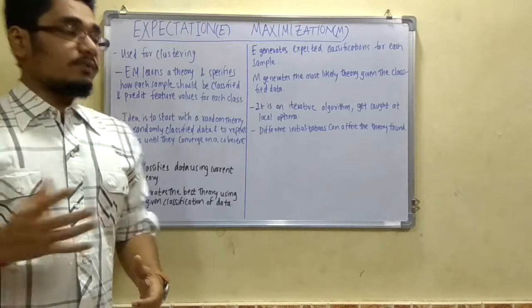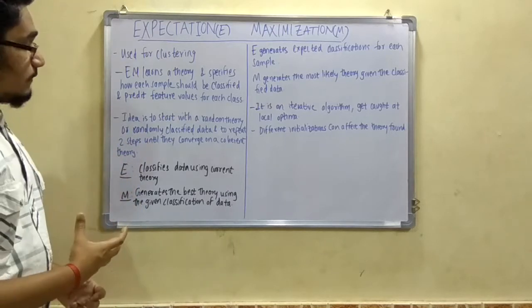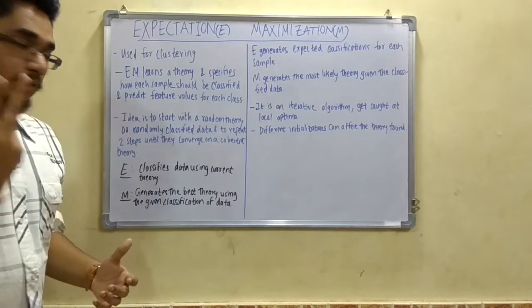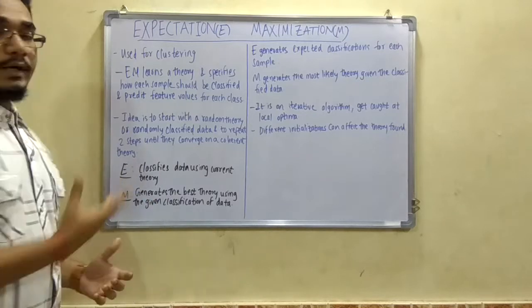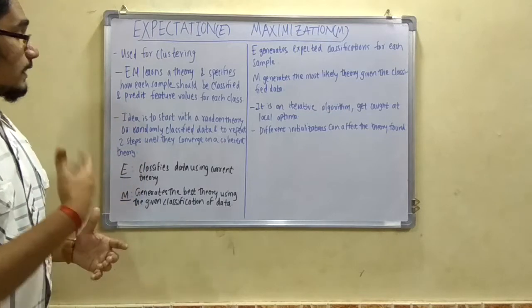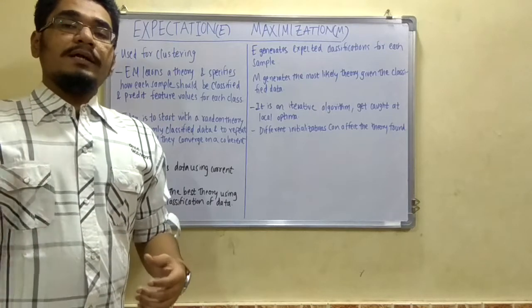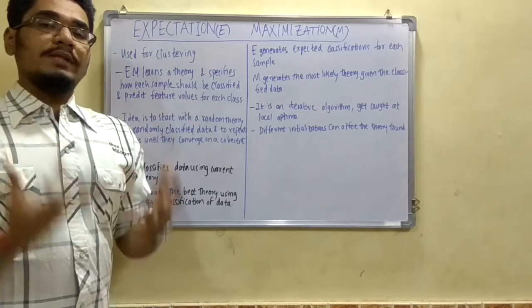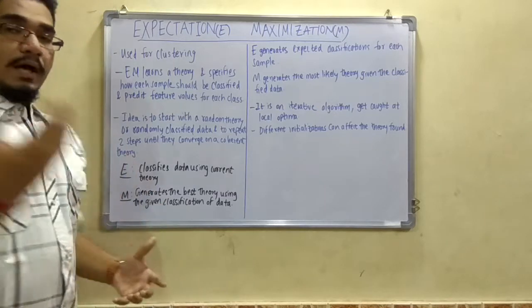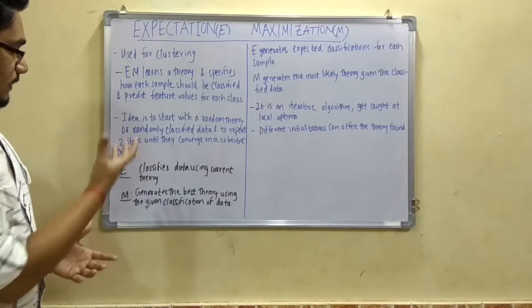The idea for EM is to start with a random theory or randomly classified data and to repeat it in two steps until they converge to a coherent theory. The EM algorithm starts with randomly classified data - it's dynamic, it keeps changing. That randomly classified data will be repeated and processed in two steps until they converge to one single point.